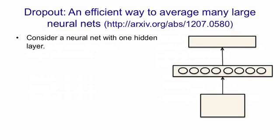Now I want to describe an efficient way to average a large number of neural nets that gives us an alternative to doing the correct Bayesian thing. The alternative probably doesn't work quite as well as doing the correct Bayesian thing, but it's much more practical.